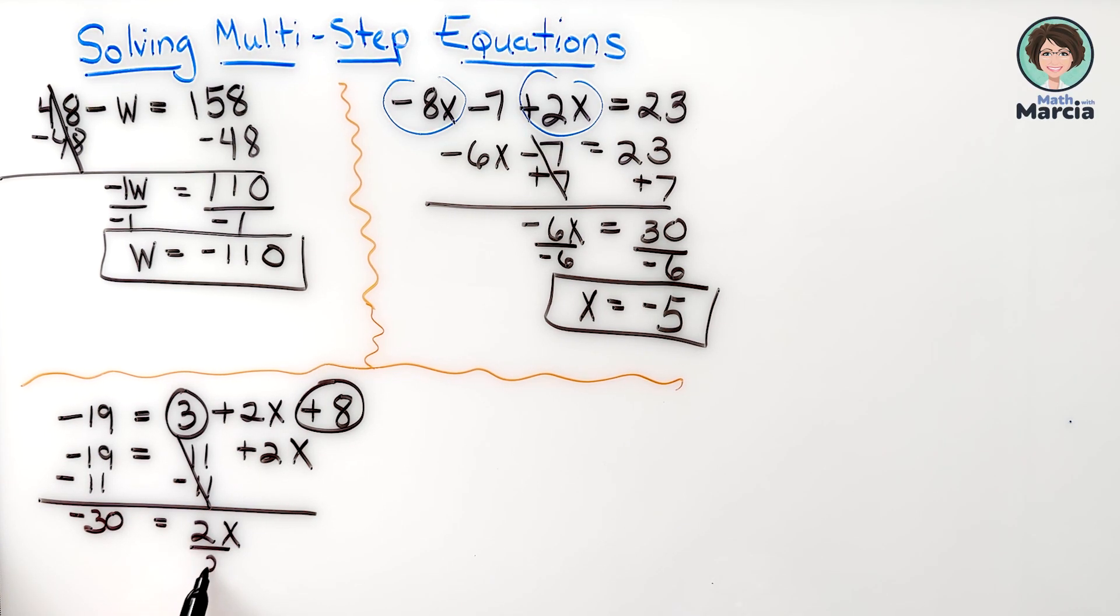I'm going to divide both sides by 2 because that's the number near the variable, so x equals negative 15.